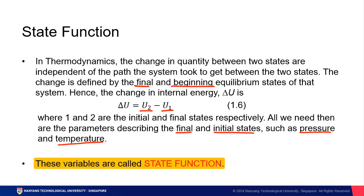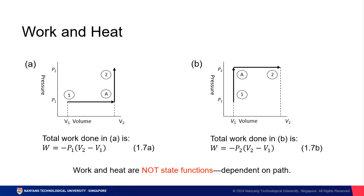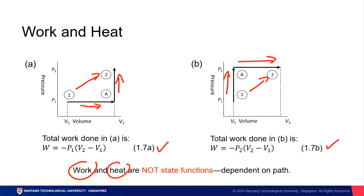Pressure and temperature are variables known as state functions. So how about work and heat? When we talk about state functions, they go from point one to point two — we are only concerned about their beginning and final states. With non-state functions, however, the path matters. For instance, in path A described in equation 1.7A, we first increased volume followed by increasing temperature to reach point two. In path B, we first increase temperature followed by increasing volume. Heat and work are not state functions because they are dependent on the path, so it is important that we take note of how they got there.